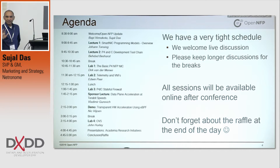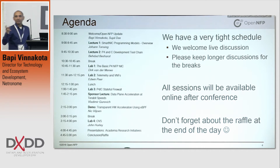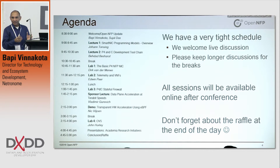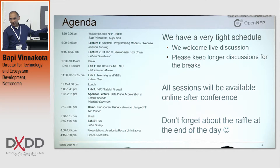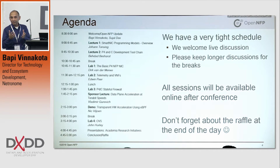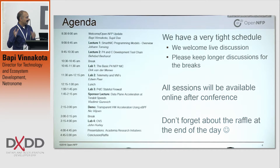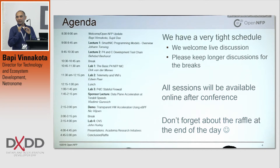We have a pretty good mixture of labs and lectures, and there are basically two models of using the NIC that we want to walk you through today. Model number one is where acceleration is transparent to the user — you have an application, you insert an Agilio NIC and it just becomes faster magically. Model number two is where you write the code in P4 to implement a networking function of your choice on the NIC. At the end, we have about four talks — one from Huawei and three from academic institutions — about the research they're planning around programmable NICs and how the intelligent server adapter is relevant to them.